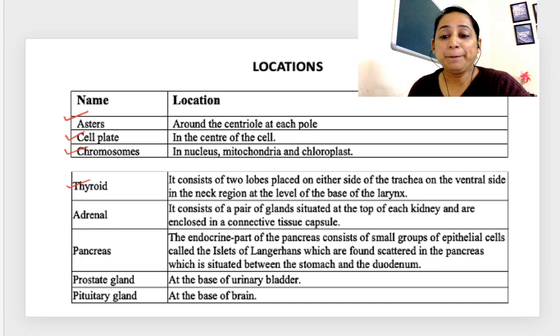Thyroid consists of two lobes placed on either side of trachea, very important, or on the ventral side of the neck. You can write neck region or around the larynx.